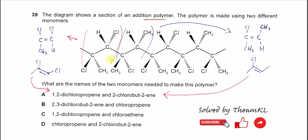Bring this part out and add the double bond between the carbons — you'll get this monomer. You can convert it to the skeletal formula to make naming easier. So this is 1,2-dichloropropene.